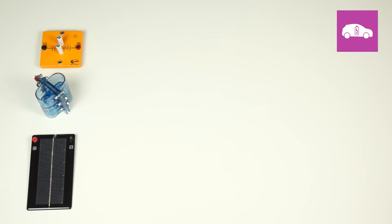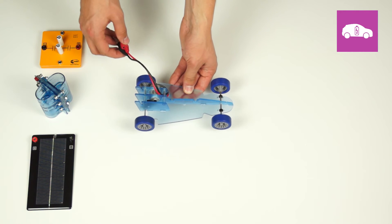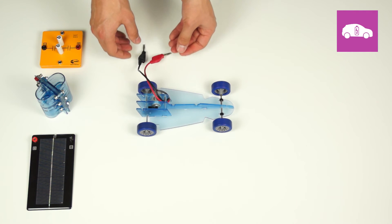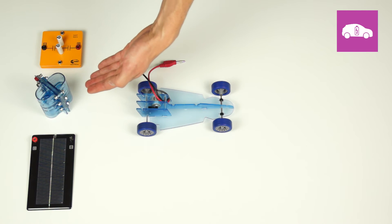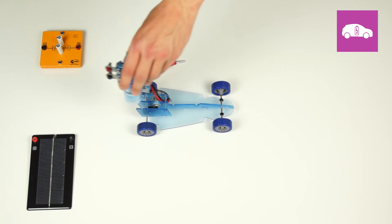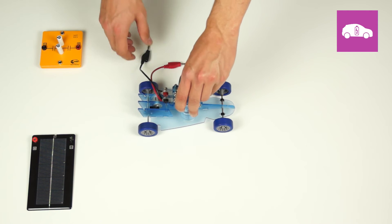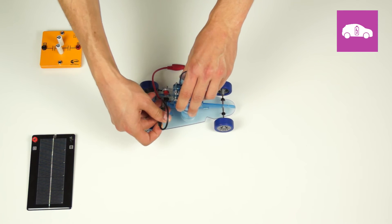Electric mobility is a very relevant topic at the moment. Our training kit explains this issue with an electric model car. It can be powered with a capacitor module, a fuel cell or a large solar module. This way, speed and range of an electric car depending on different technologies can be shown.